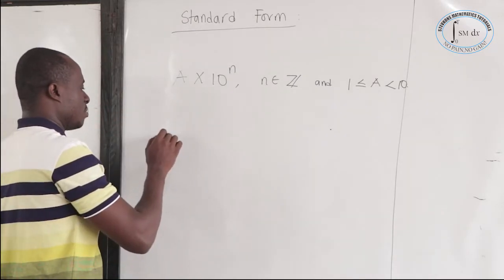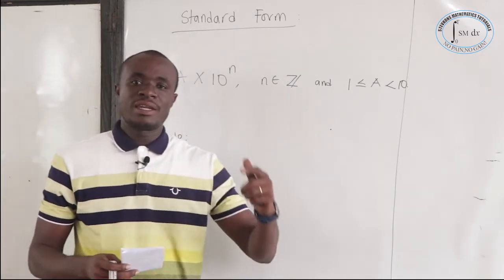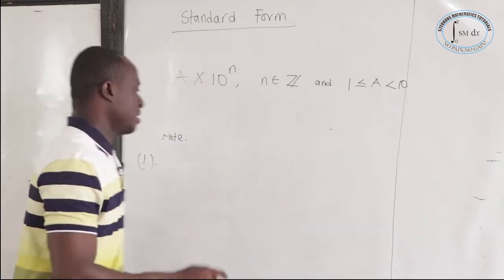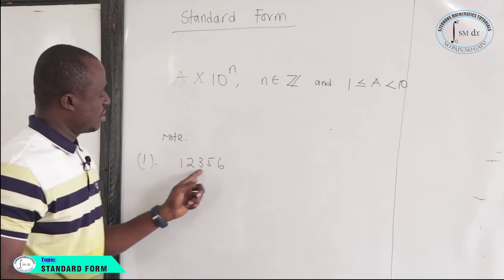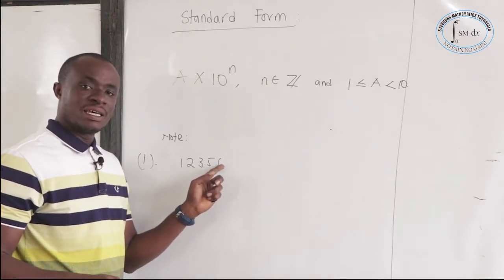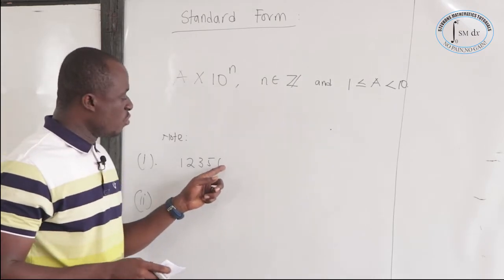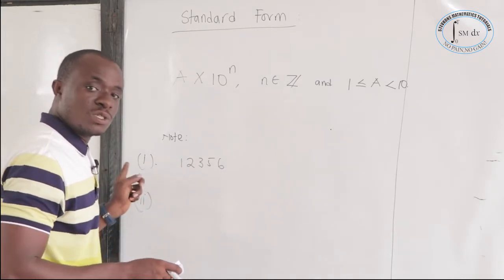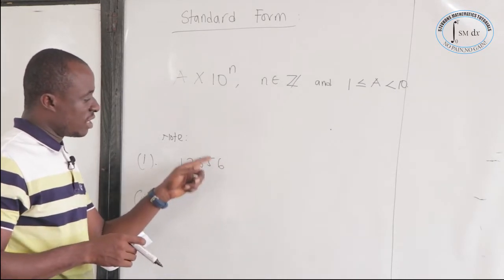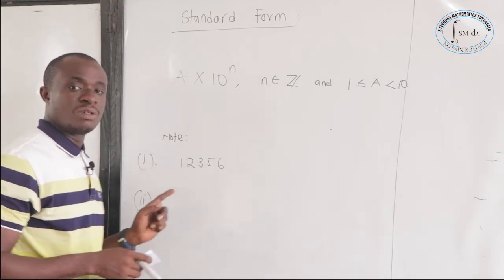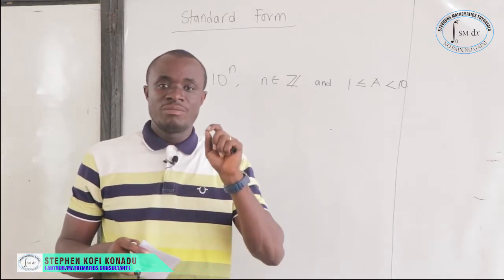Now let's note the following. For a whole number, the decimal point is at the last end. For example, if you have 1, the decimal point is at the last end. When we move the decimal point leftward, the power becomes positive. If you move the decimal point leftward, the power becomes positive. And if you move it rightward, the power becomes negative.